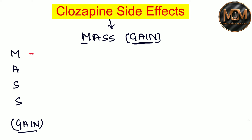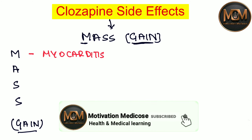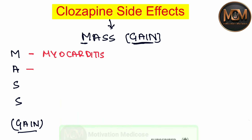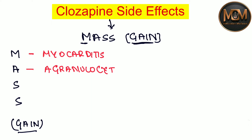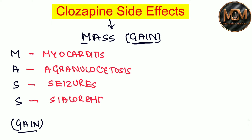From the M, we have Myocarditis. From the A, we have Agranulocytosis. From the first S, we have Seizures. From the second S, we have Sialorrhea. And as I told you, we have taken the full word 'GAIN,' which means weight gain.